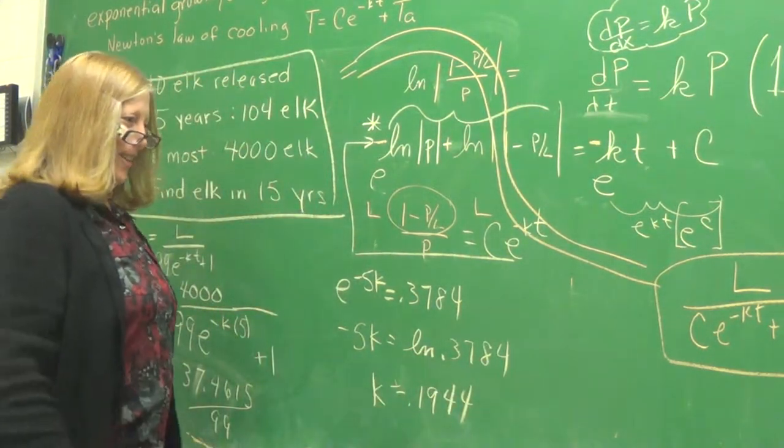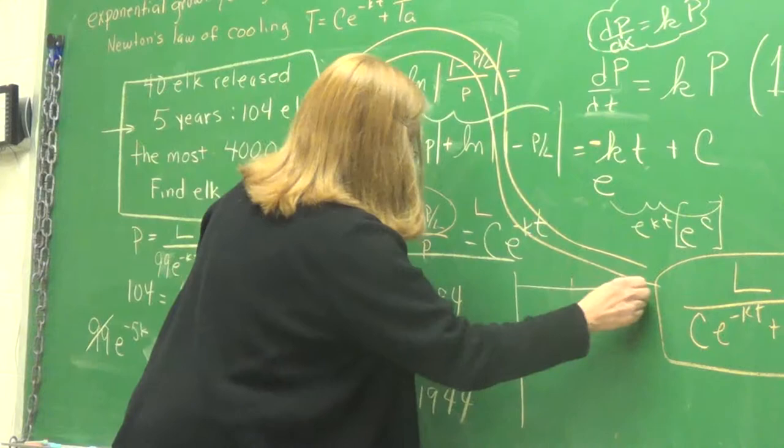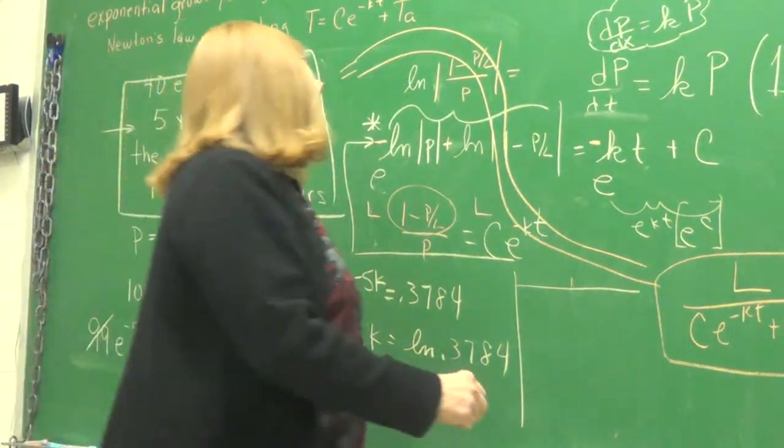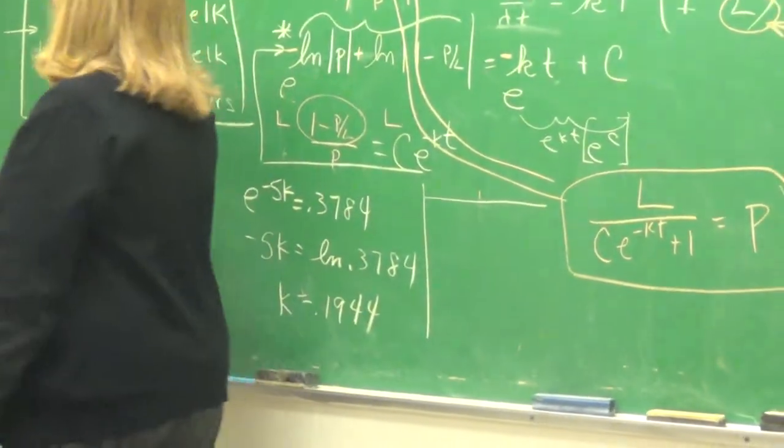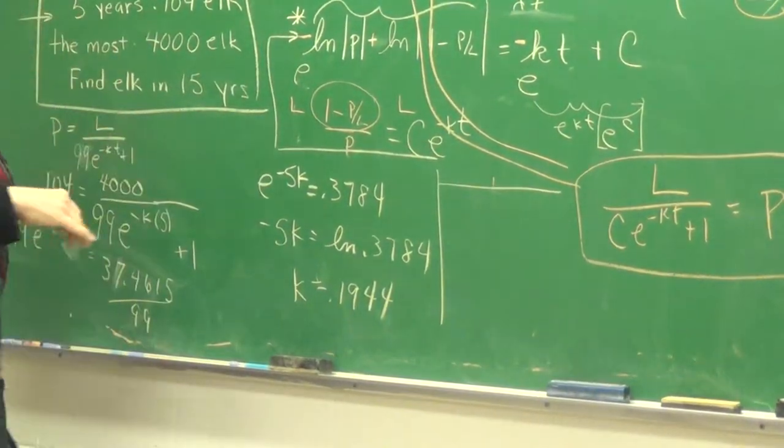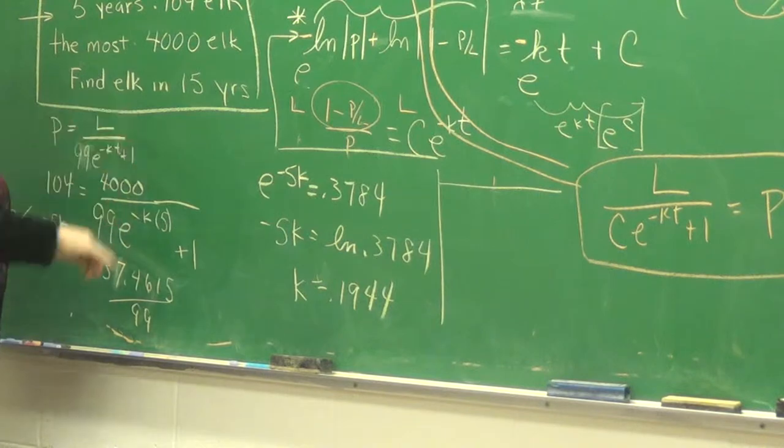We're going with it. Are we done? No. The last step is we're going to take the final information that we're looking for and use the C and K that we found. So we're looking for find the elk in 15 years.